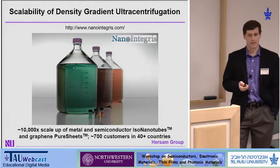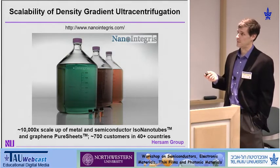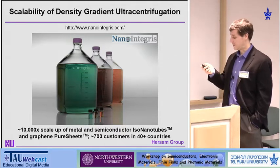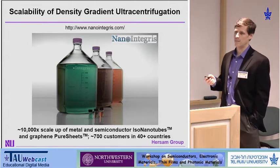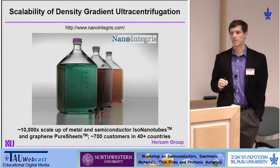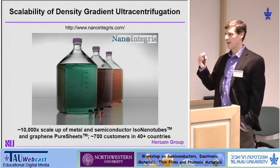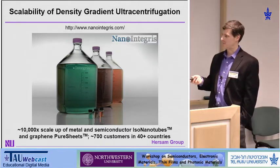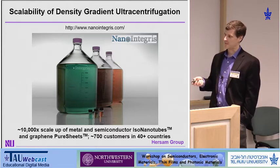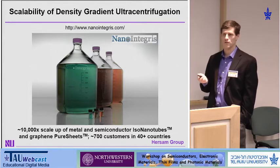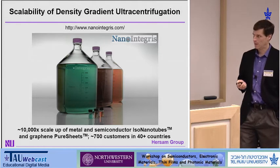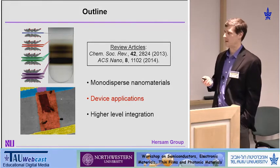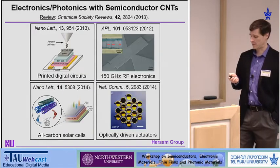This method is industrially scalable. Nano Integris is a company that spun out of my lab in 2007 and commercialized metallic and semiconducting carbon nanotube dispersions. Nathan Yoder, a PhD student of mine, became the CTO and scaled up the process by 10,000-fold in 18 months. We stopped scaling up because we could produce 10× more material than the worldwide demand. They've now ramped up to about 700 customers in 40 countries, which made Nano Integris a target for acquisition in 2012 — it's now owned by a larger company called Raymore. The bottom line: we have plenty of monodispersed nanomaterials, so what can we do with them?